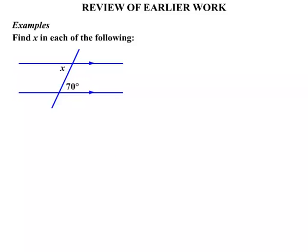Now these next three are going to be examples with parallel lines involved. Now that x and that 70 degrees, we say that x equals 70 degrees, they're equal because they are alternate. So alternate angles with parallel lines.